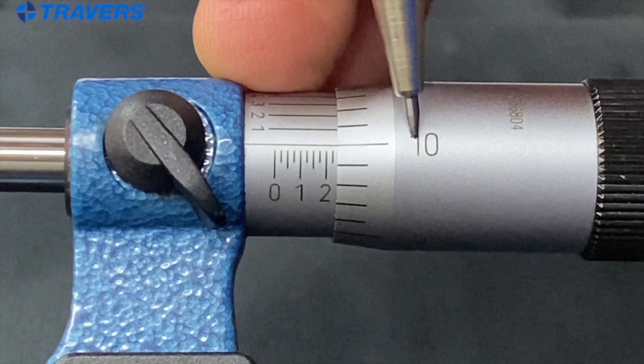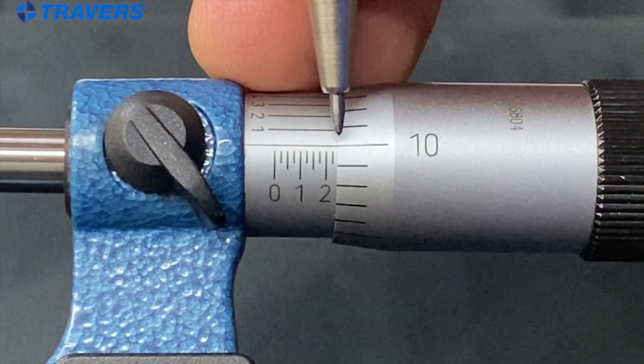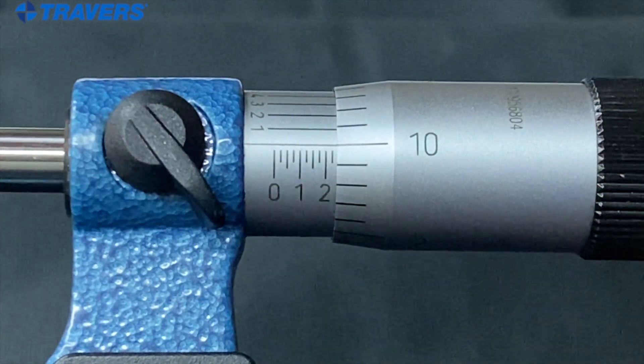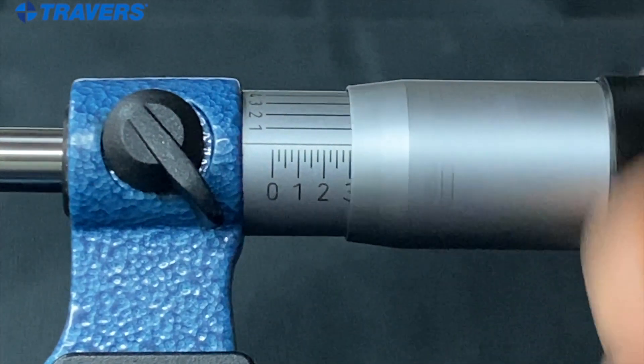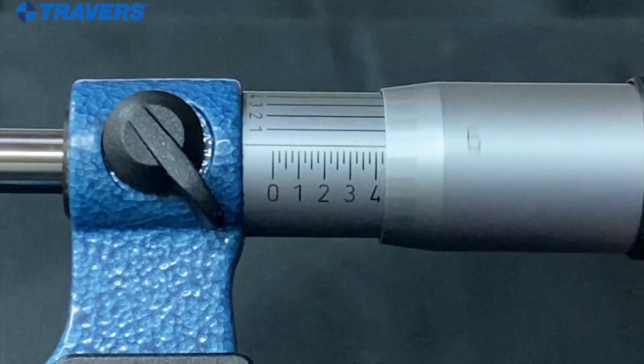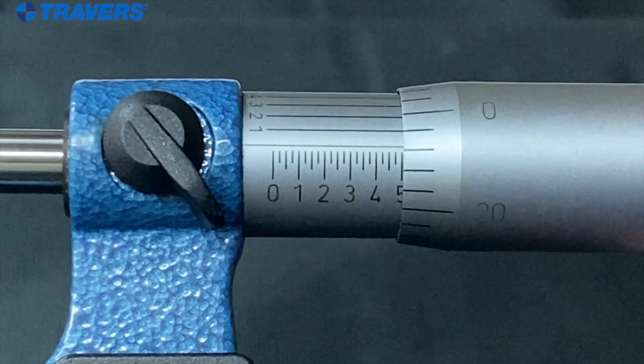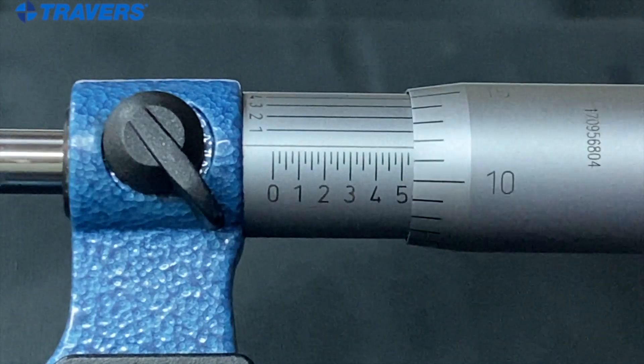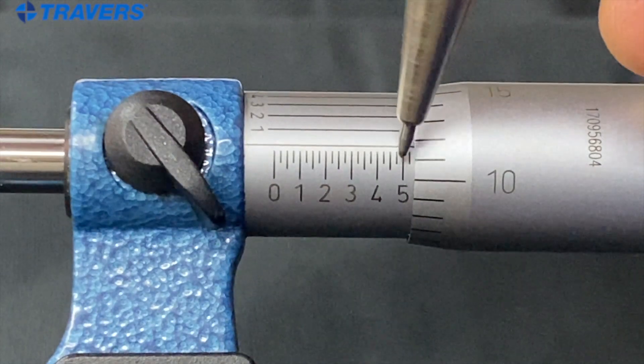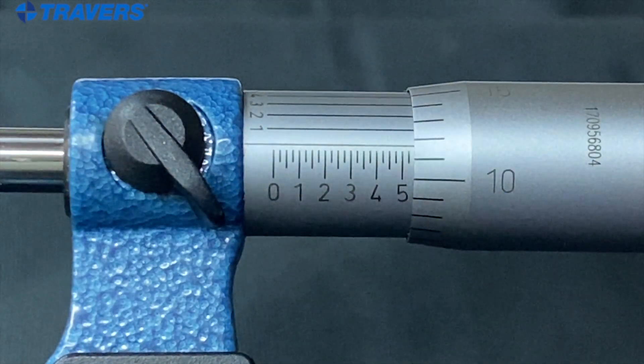So it's two twenty-five plus ten, so two thirty-five. So that's measuring two hundred and thirty-five thousandths. Let's get something bigger past half an inch. And there's the five, so that means the five is a half inch or five hundred thousandths.